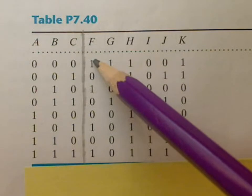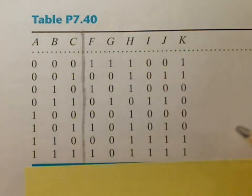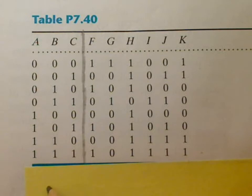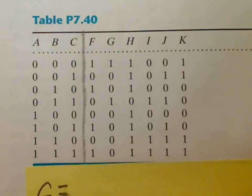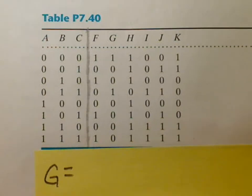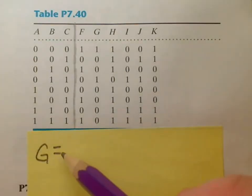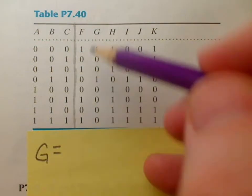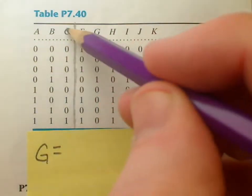Now you're going to write an equation for F in the homework. I wanted to show you an example of how this goes by using the column G instead. So let me back up here, let me widen up a bit. So how do you write the logic expression for G in terms of A, B, and C?